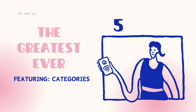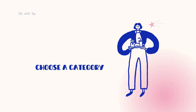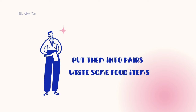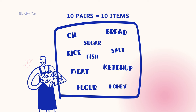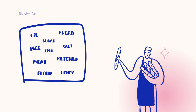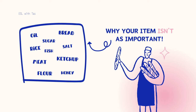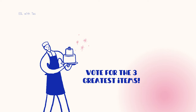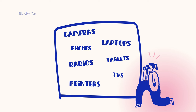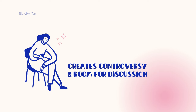Last but certainly not least: the Greatest Ever. First, choose a category — let's go back to food. Divide your class into pairs and write food items on the board, matching the number of pairs. For example, if you have 10 pairs, write 10 different food items. Without any explanation, ask each pair to pick an item. Then tell them they have to explain why their item is the most important. At the end, the class votes for the three greatest food items ever. You can repeat it with different categories. I love this activity because it creates controversy and a lot of room for discussion.